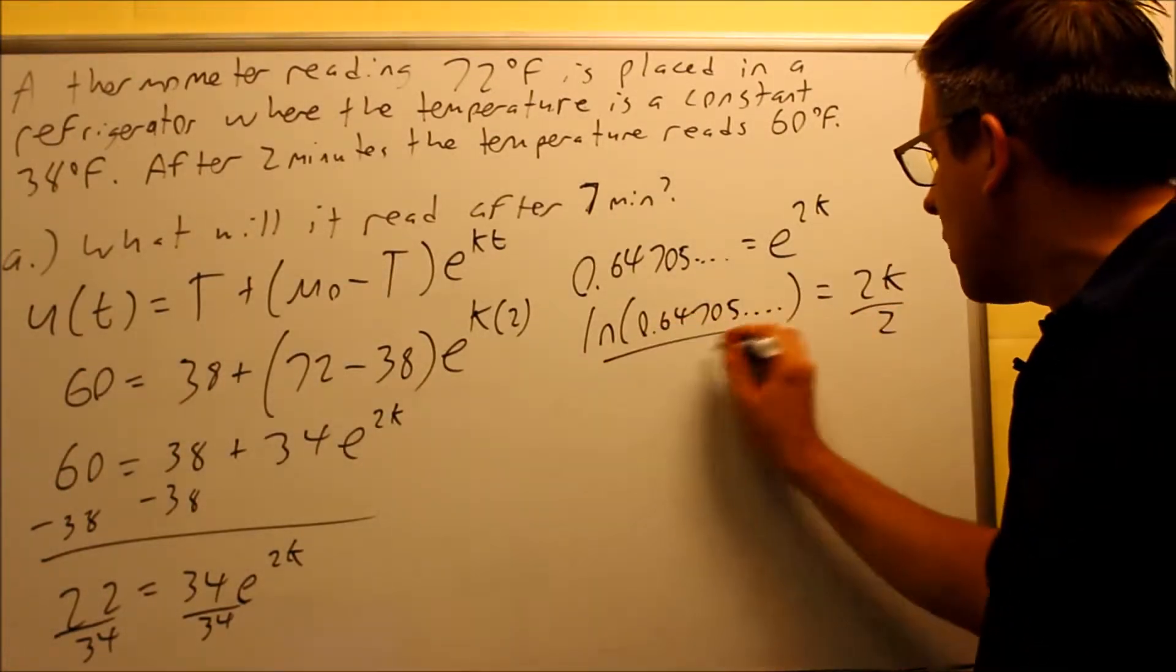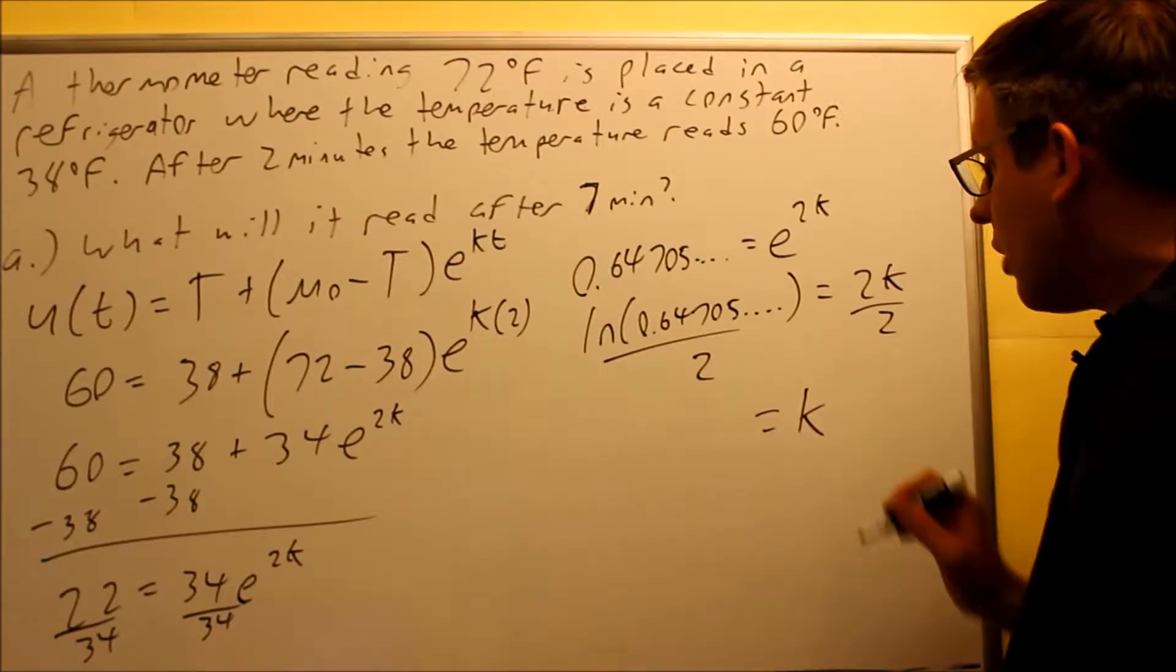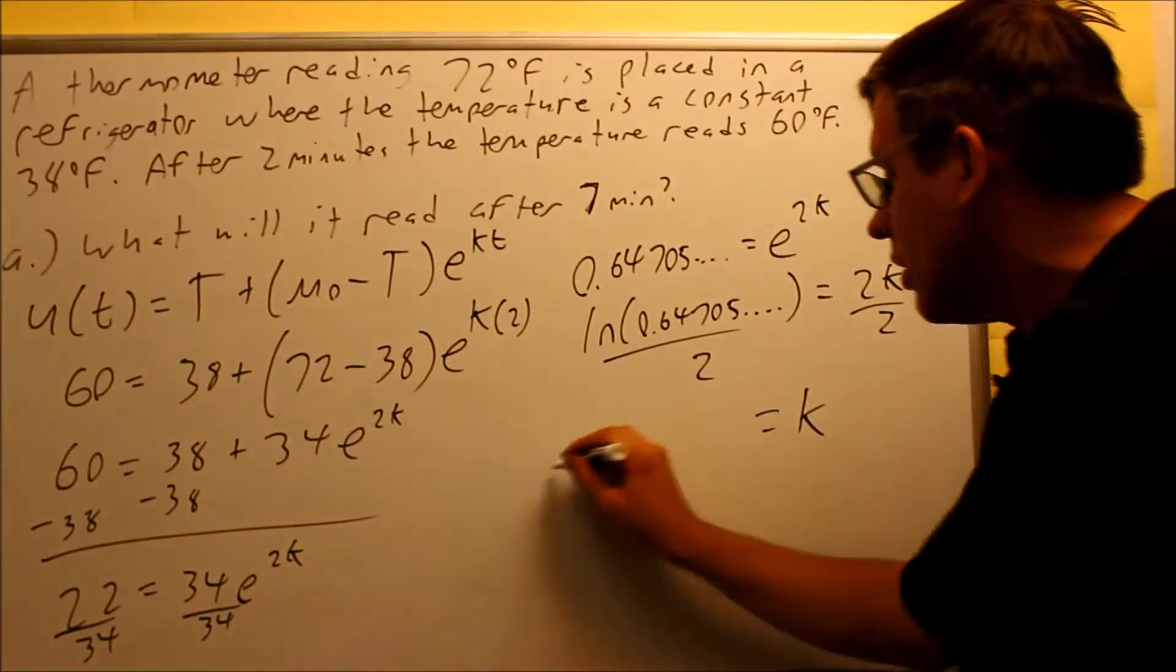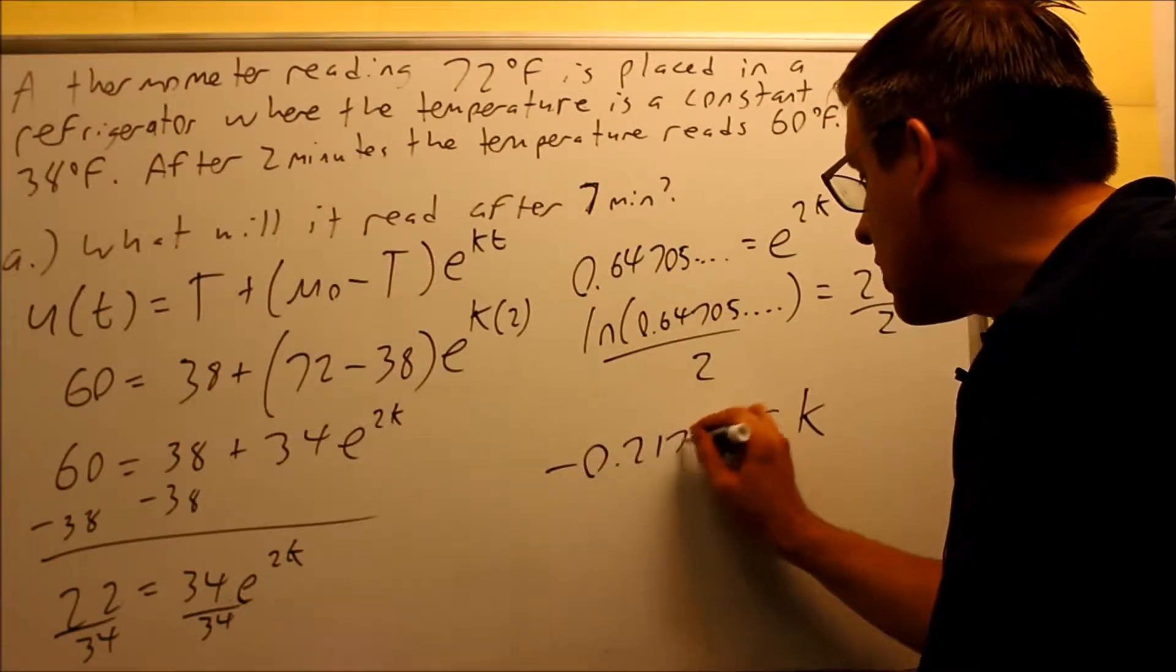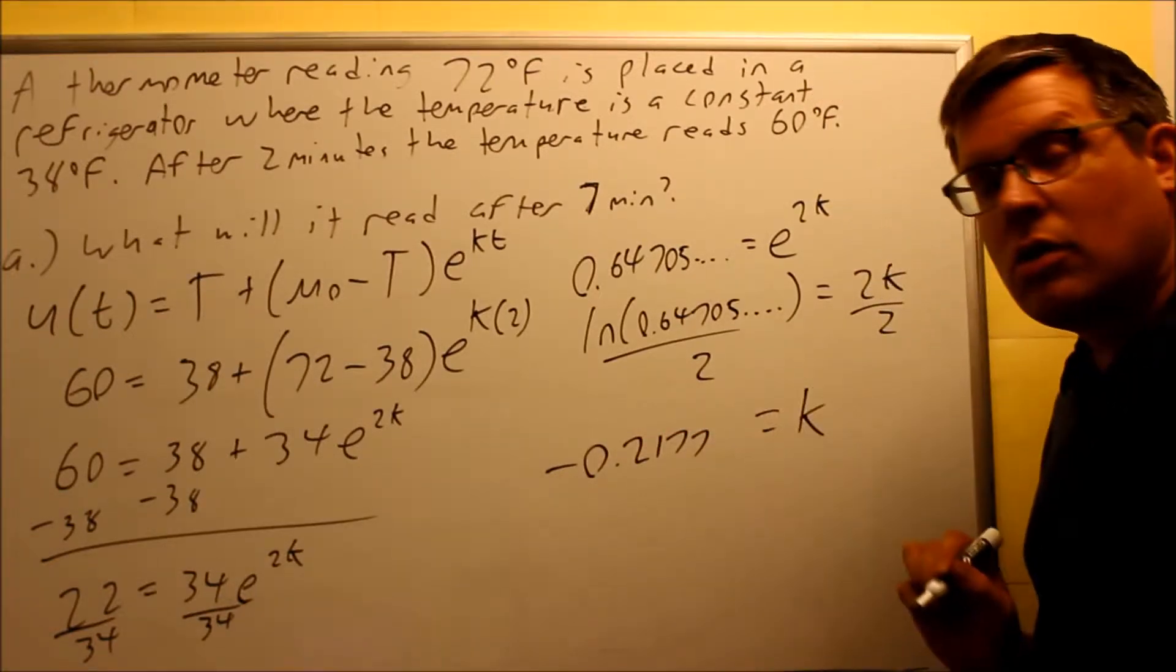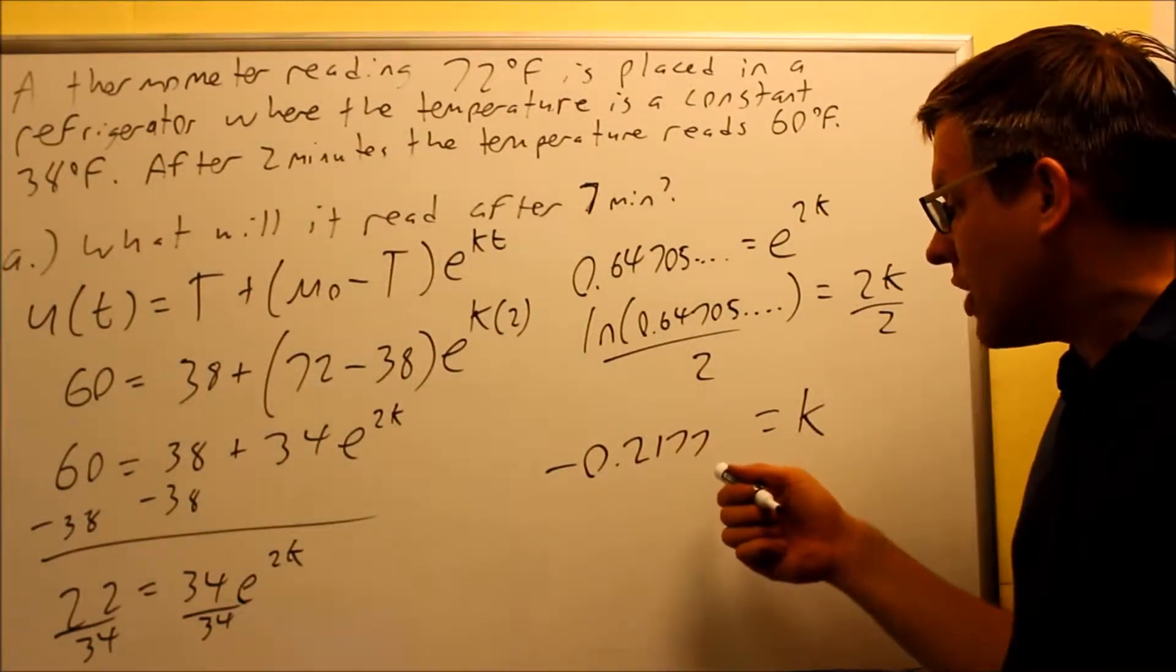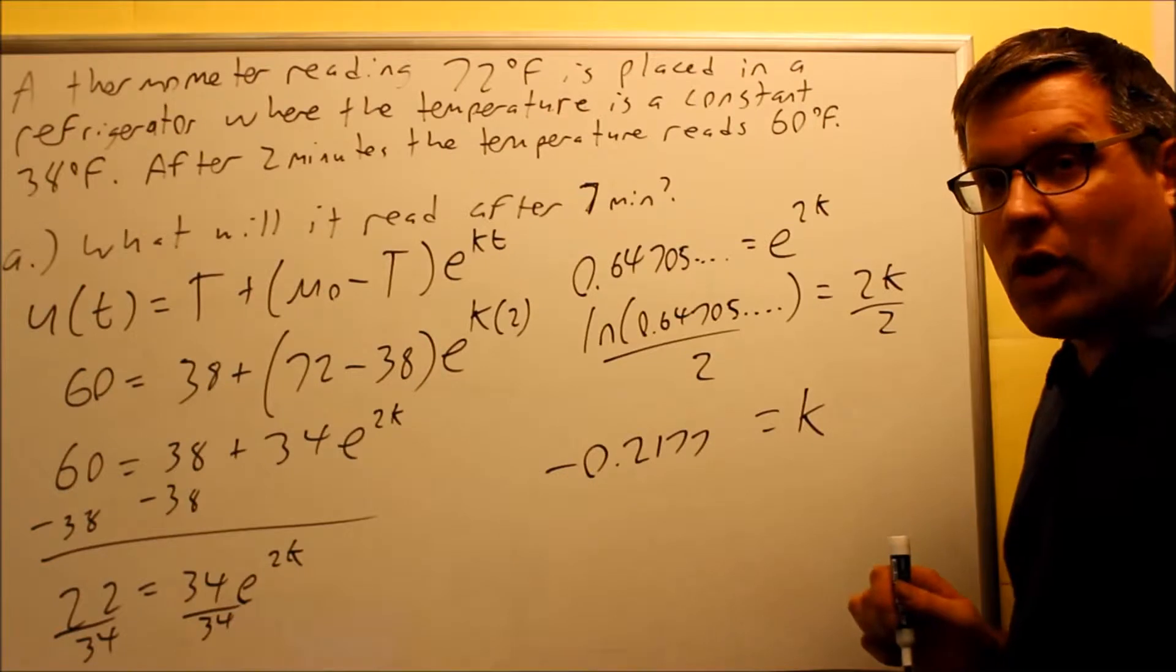Divide both sides by 2, and that's going to get your value for k. If you put this into the calculator, you get negative 0.2177, and I'm rounding this to four places. That's your k value.